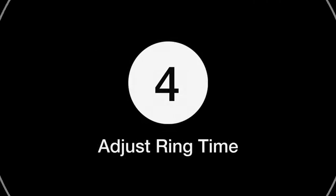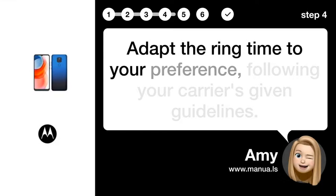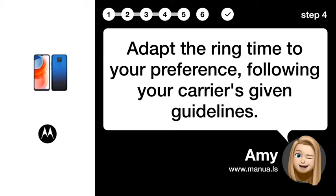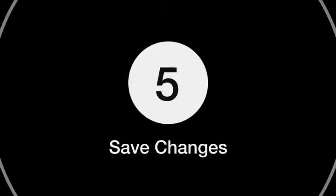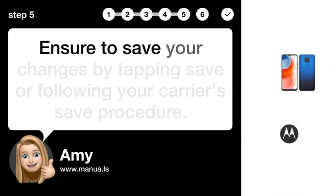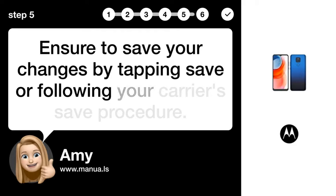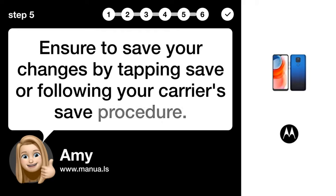Step 4: Adjust ring time. Adapt the ring time to your preference, following your carrier's given guidelines. Step 5: Save changes. Ensure to save your changes by tapping Save or following your carrier's save procedure.